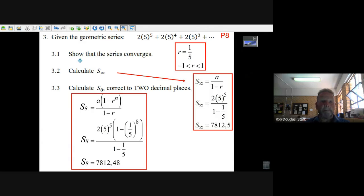The first question says show that the series converges. When you see this word converges in series, write down |r| < 1, because this is the condition for convergence. Because r is 1/5, and it's a number between 1 and -1, that's why this series converges.